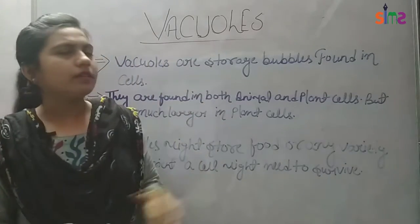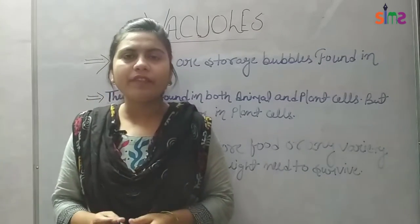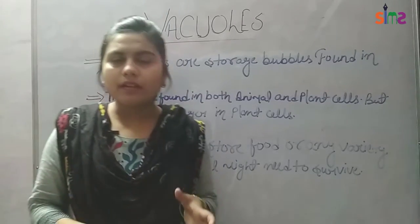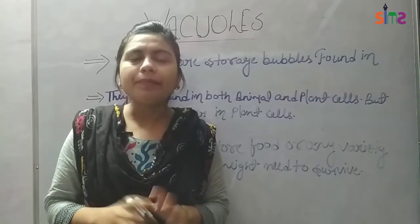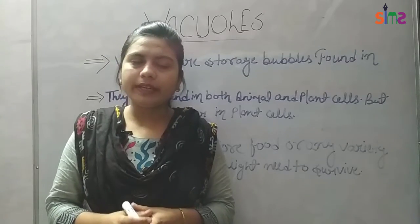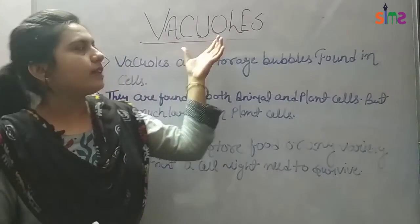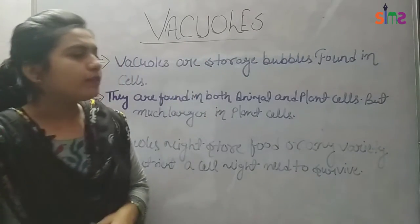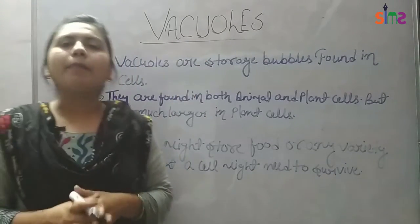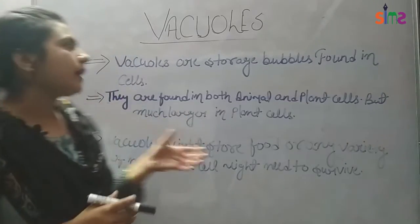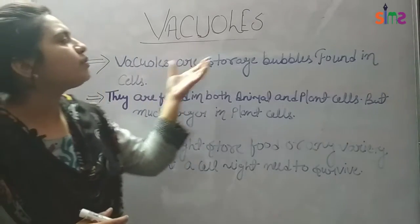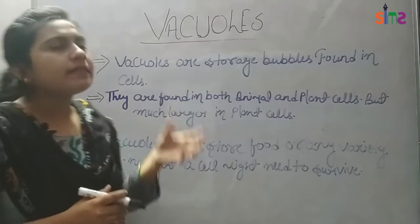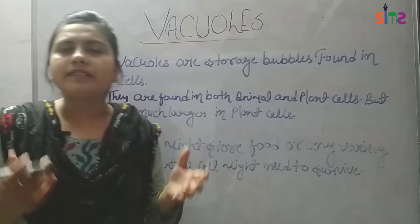We have done with the last lecture — we have done with the lysosome. So today we are going to start vacuoles. You can see here, I have also written vacuoles here. Vacuoles are storage bubbles found in cells. We generally call vacuoles storage bubbles which are present in our cells.